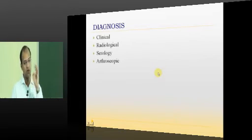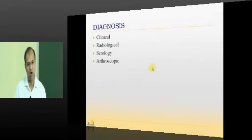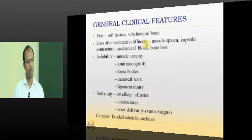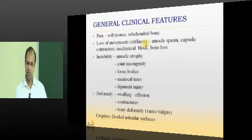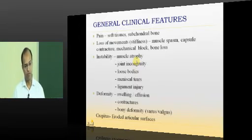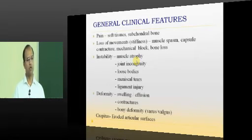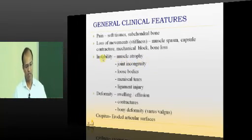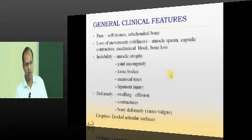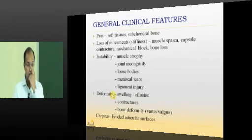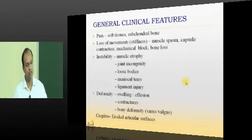Clinically, patients present with pain, loss of movement or stiffness, and inability to use the joint. Instability can occur due to muscle atrophy from disuse, joint incongruity, loose bodies, meniscal tears, ligament injuries or degeneration. Patients may also present with swelling, flexion deformity of the knee, or varus deformity — these are the clinical patterns seen in osteoarthritis.